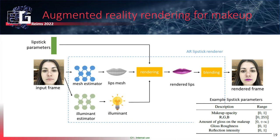The lipstick parameters can include the makeup opacity, which is between 0 and 1; the RGB color values between 0 and 255; the amount of gloss on the makeup; the gloss roughness; and the reflection intensities.